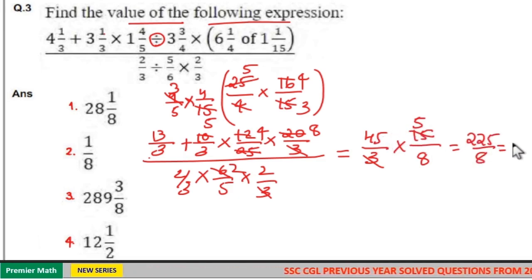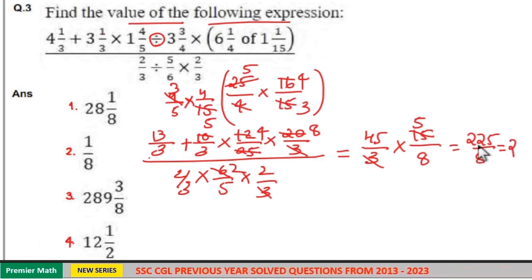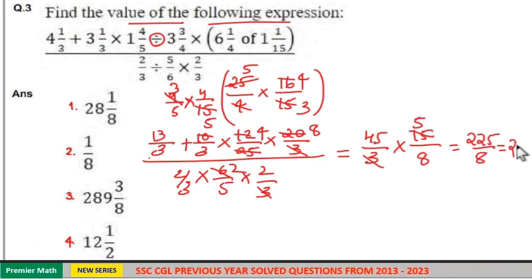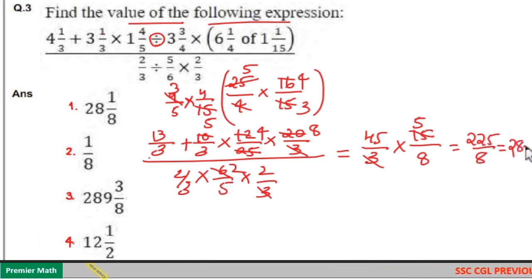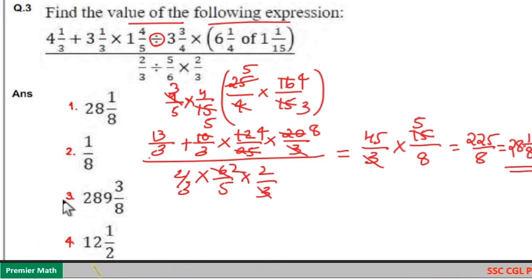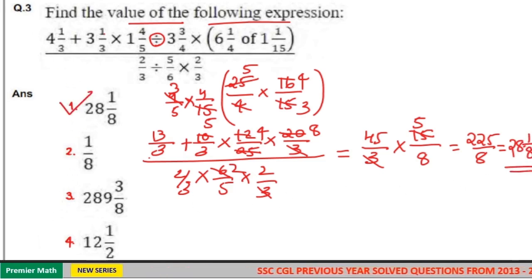225 by 8: 8 goes 2 times in 16, remaining 65, 8 goes 8 times in 64, so this equals 28 and 1 by 8. Option 1 is your answer.